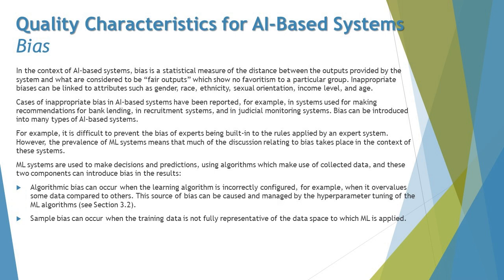Today we are also talking about what bias is and how it is defined for AI-based systems. In simple terms, bias is a defect in an AI-based system — it is the deviation between the expected and the actual result. When you test a system, if the expected result and the actual output are the same, the system is working as expected; if they differ, that deviation is a defect — and in this context it is called bias.